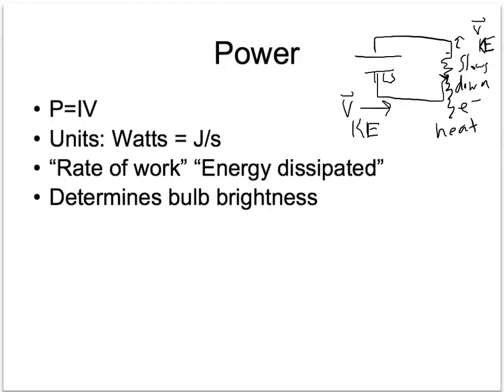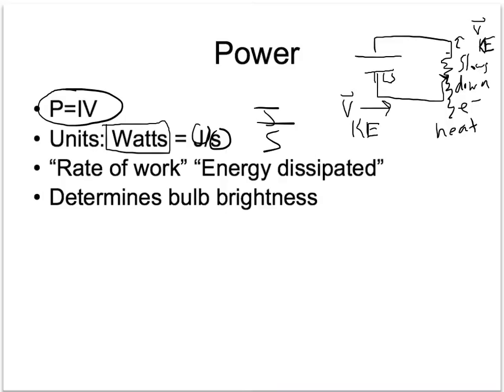We can calculate how much heat per second that resistor gives off using the formula P equals IV — power equals current times voltage. That gives us heat per second, which is joules per second. The unit joules per second is called watts. This is like watts in your light bulb — a 100-watt light bulb is generating 100 joules of energy per second.